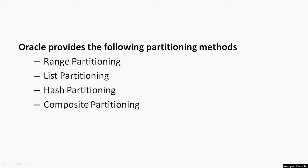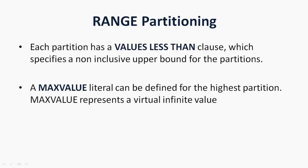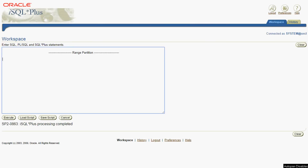Oracle provides the following partitioning methods: range partitioning, list partitioning, hash partitioning, and composite partitioning. In this video we are going to implement range partitioning. Range partitioning is useful when data has logical ranges into which it can be distributed, like a range of dates or a range of numbers. Each partition has a VALUES LESS THAN clause which specifies a non-inclusive upper bound. The MAXVALUE literal can be defined for the highest partition and represents a virtual infinite value.